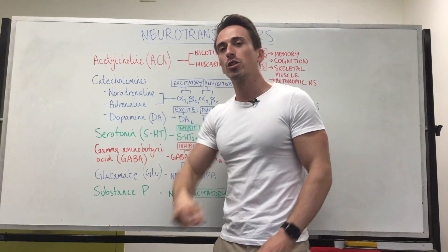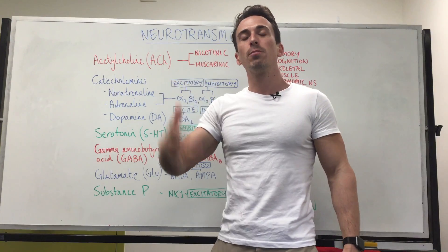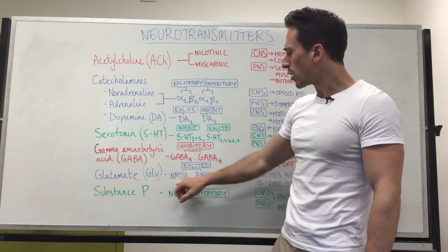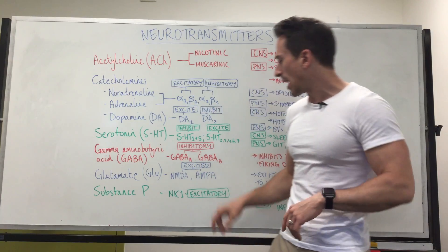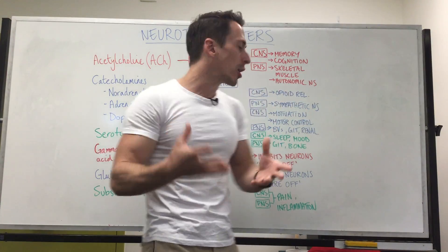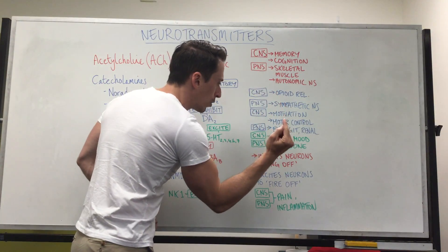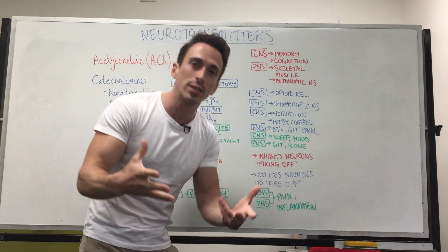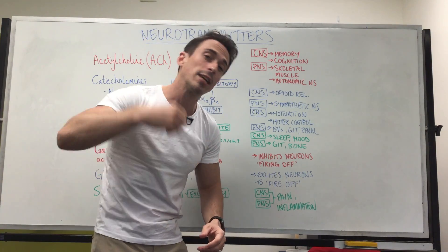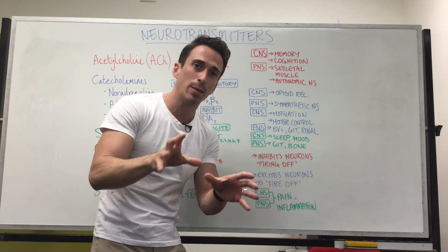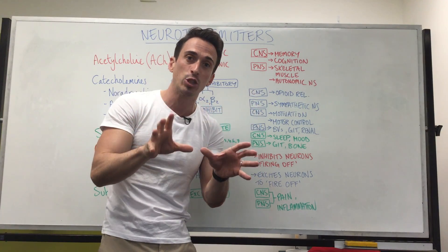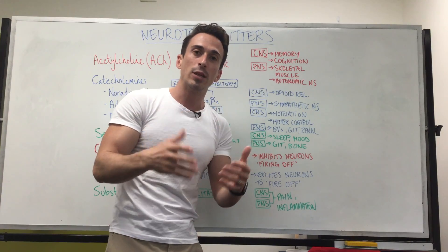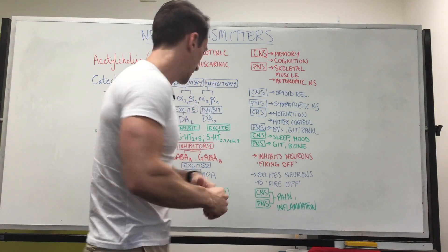Glutamate is actually the most common and most abundant excitatory neurotransmitter in the nervous system. It has two major types of receptors: NMDA and AMPA. When stimulated, they are excitatory and tell neurons to fire off. You can have glutamate toxicity — too much glutamate being released can actually kill brain cells, and this has been implicated in dementia and Alzheimer's disease.